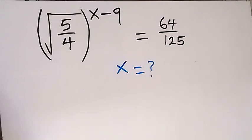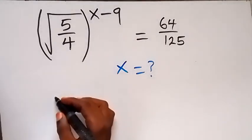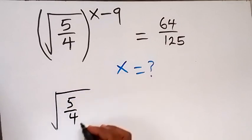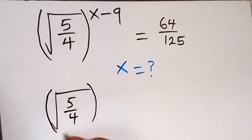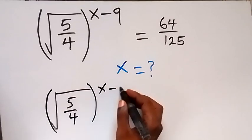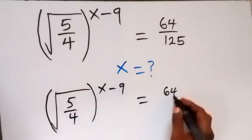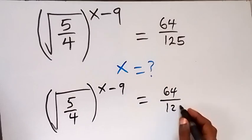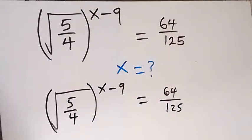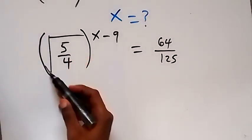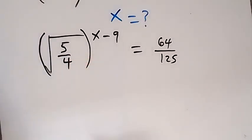Hello, you are welcome. How to find the value of x in this nice algebra problem. Here we are given the square root of 5 over 4, raised to power x minus 9, equals 64 divided by 125. From here, when we apply the law of indices, this square root can be written as raised to power half.